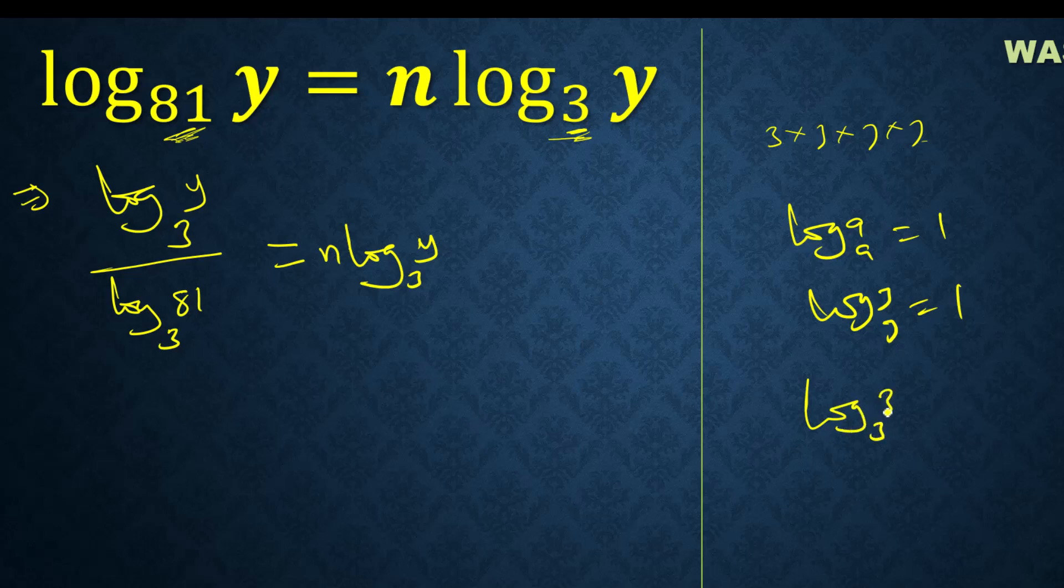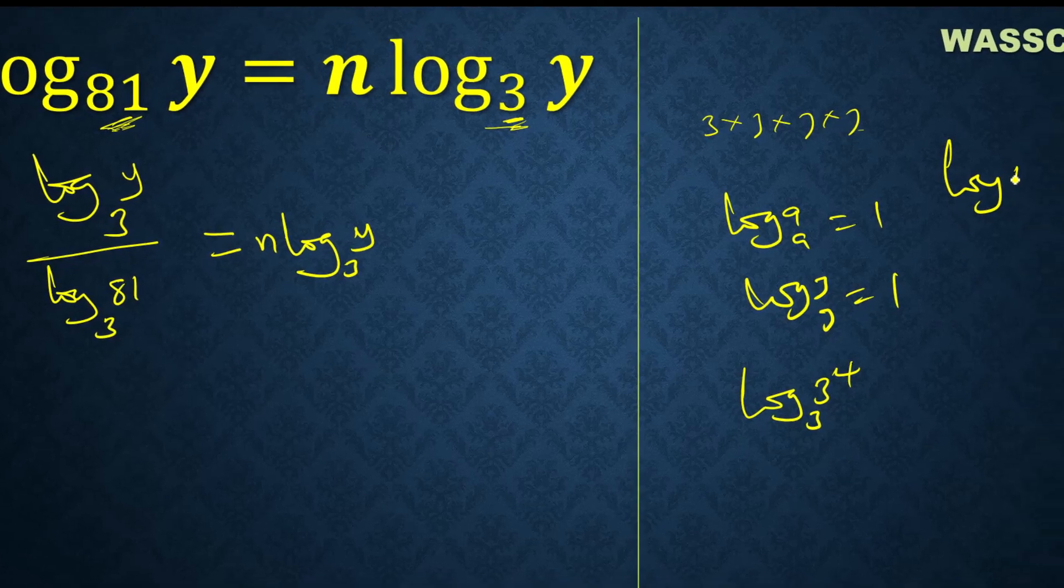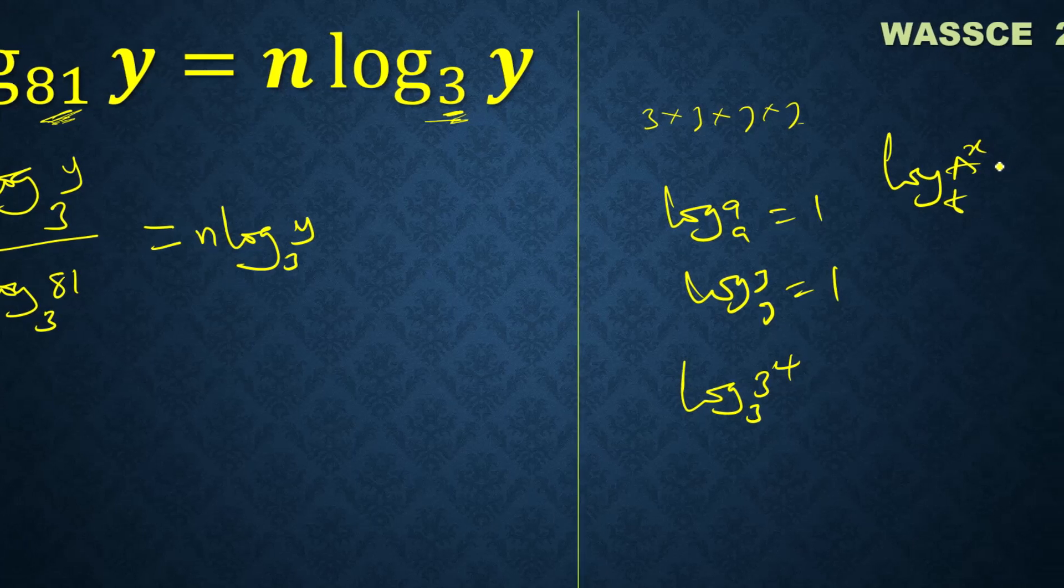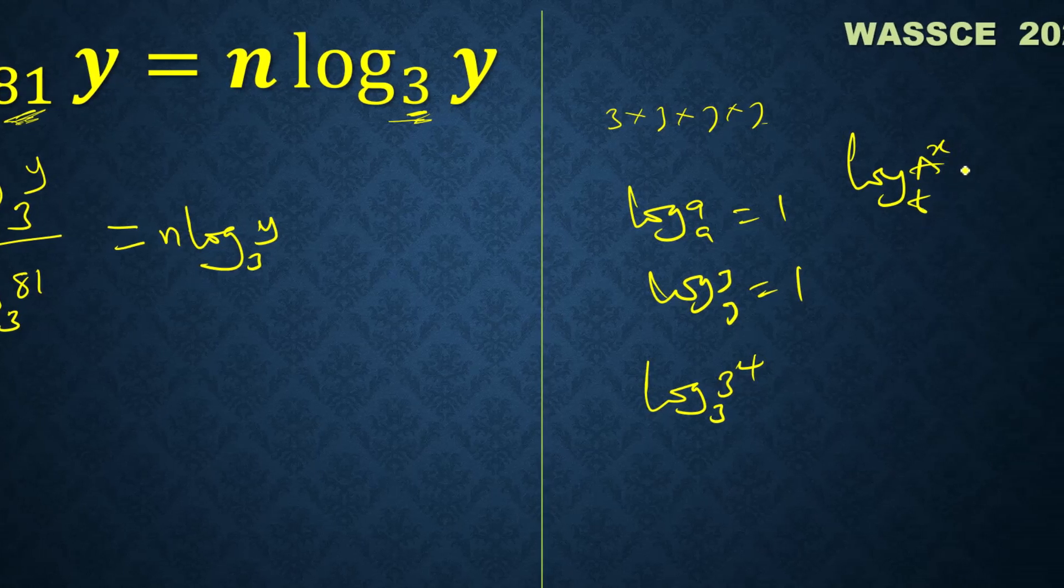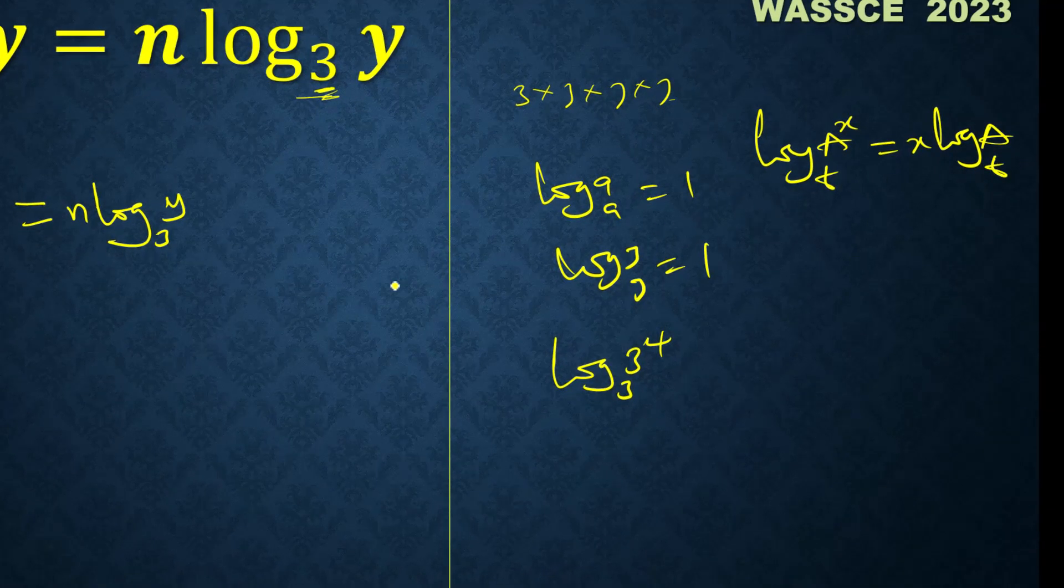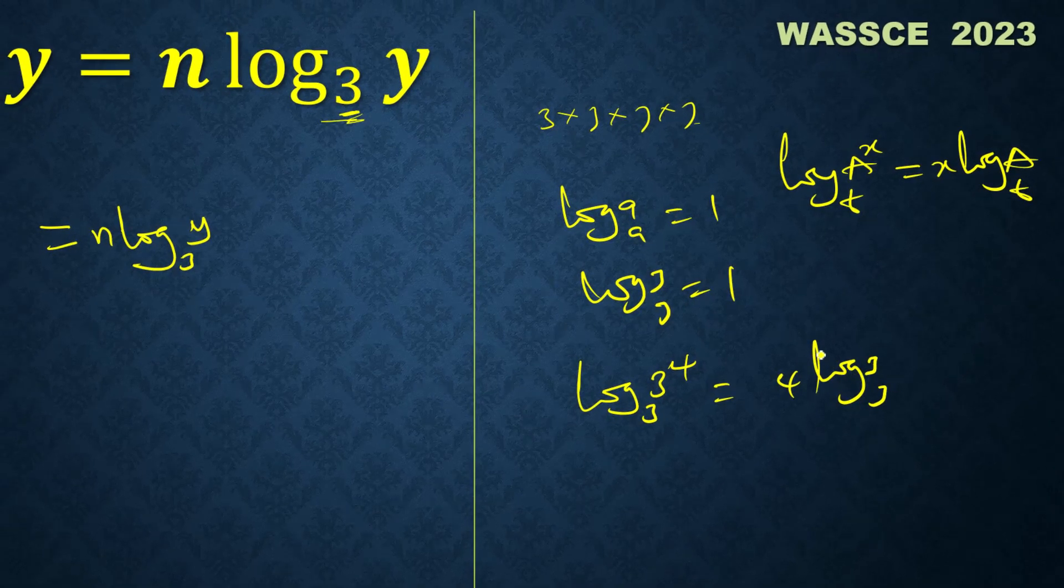Now log a raised to x base b is the same as x log a to base b. So we apply the power here: 4 log 3 to base 3. The value of a number to the same base is 1, so this side is 1. One times 4 is 4, so this side is 4.